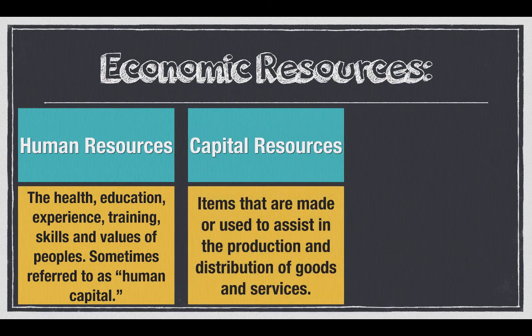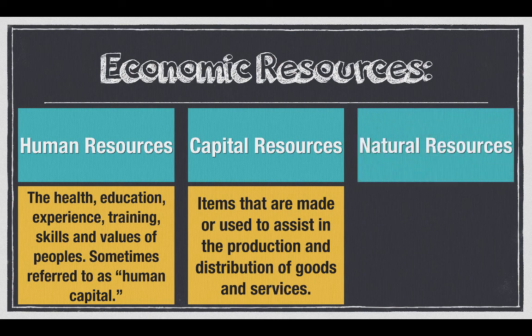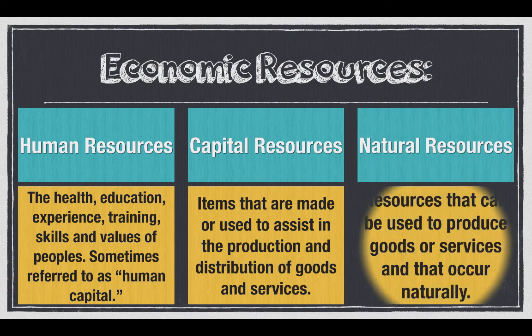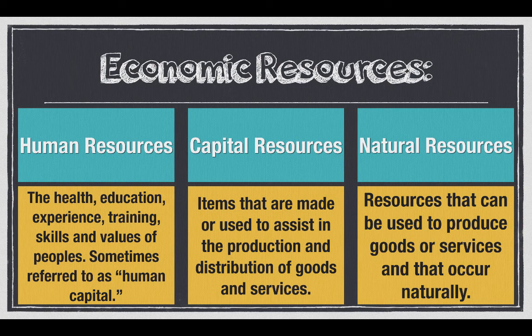Capital resources are items that are made or used to assist in the production and distribution of goods and services. And finally, natural resources are resources that occur naturally and can be used to produce goods or services. All three types of resources are important, and if you try hard enough, you can always find a product that contains at least all three of them.